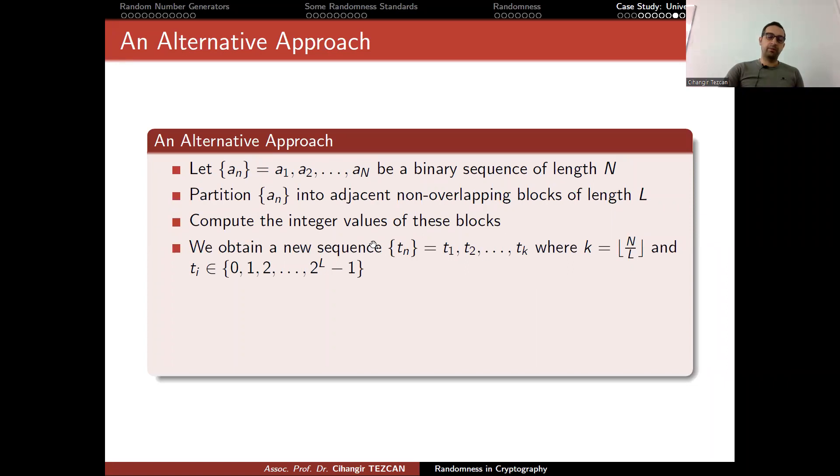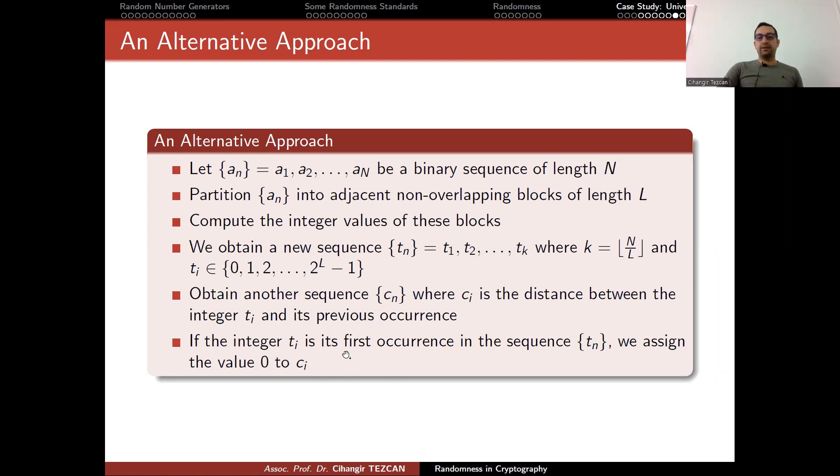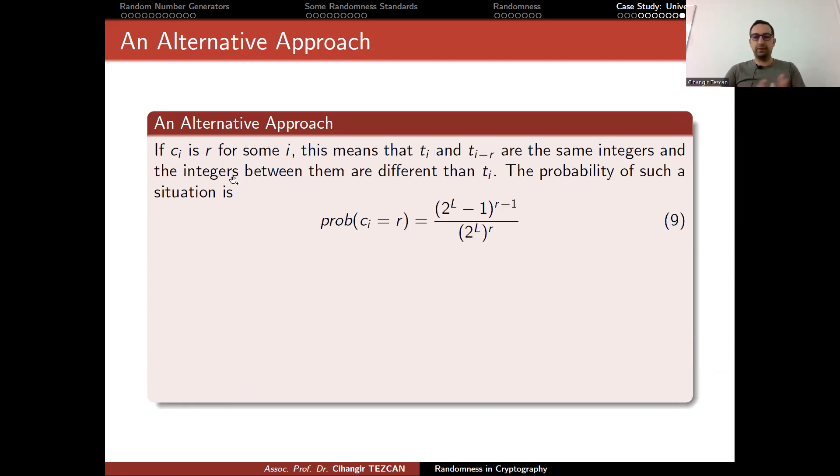Choose the block size, turn them into blocks and calculate the integer values, obtain the distances. If the integer T_R is its first occurrence in the sequence, just assign the value zero to C_I. If C_I is R for some I, this means that T_I and T_I minus R are the same integers, and the integers between them are different than T_I. The probability of such a situation is this. You have to use some pen and paper to calculate this, but trust me, the probability is this.